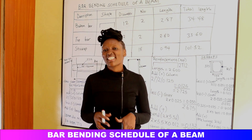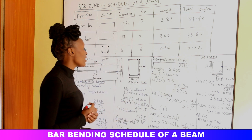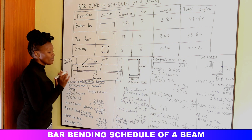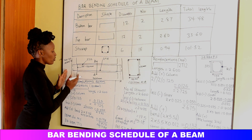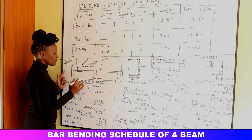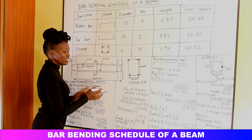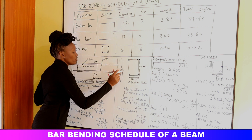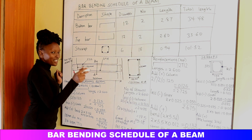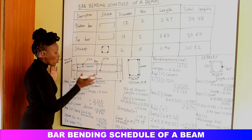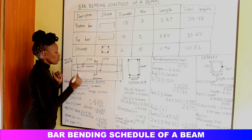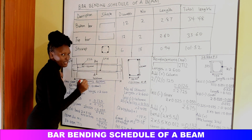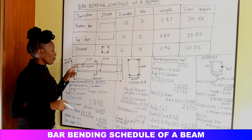In today's video we are looking at the bar bending schedule for beams. In our plan we have a section of a beam — this beam runs from a column to a column, and it is a ground beam found below the surface of the earth for the foundation. The beam has bars at the top and some at the bottom, and they are tied together by stirrups. We have cut the section halfway to see the bars at the top, bars at the bottom, all tied together by stirrups.